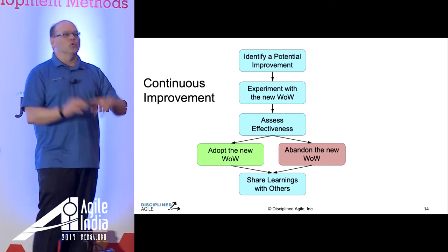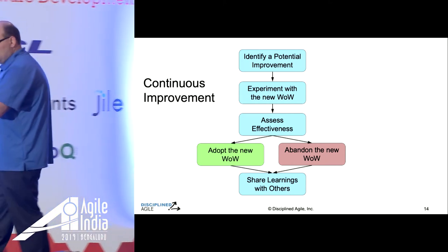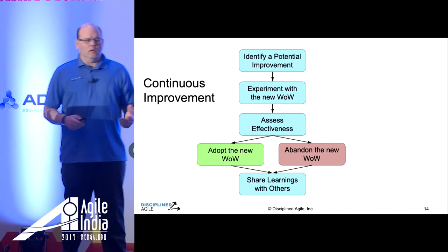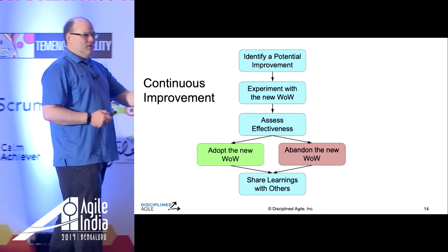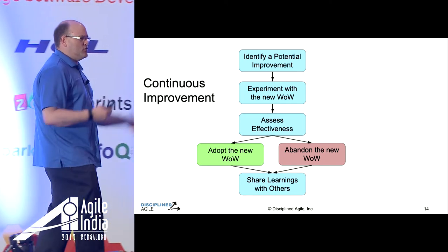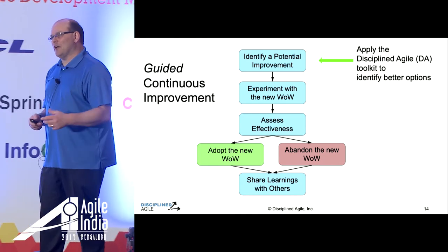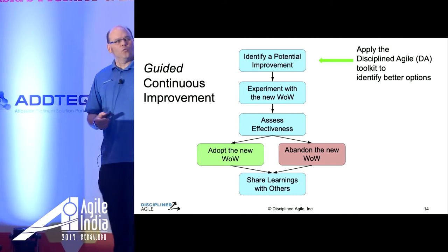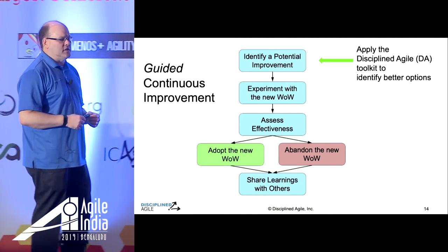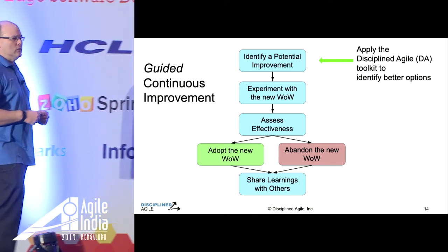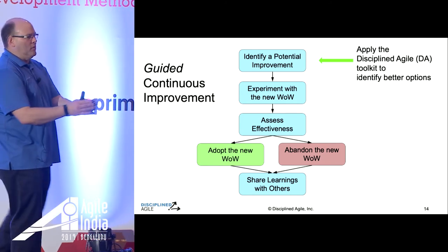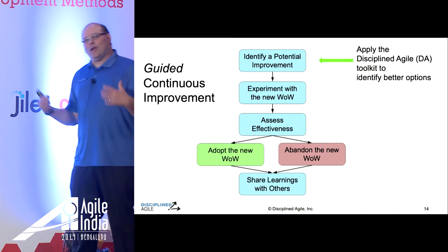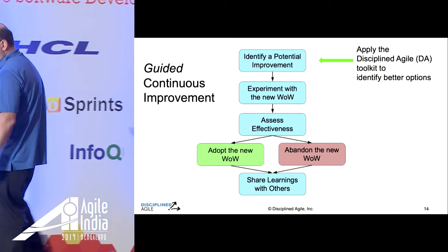This is all lean 101, improvement 101 type stuff. But the issue is the very first step: you feel a tension, you come up with an idea and try it out. How do you know what to try? There are hundreds if not thousands of practices out there. This is where the toolkit comes into play. The issue is we're not process experts. Very few of us are process experts. How do you own your own process when you don't even know it's for sale? If you're in method prison and you've only been told about the 12 or 15 practices of a framework, how do you learn about other potential techniques that might work better for you?